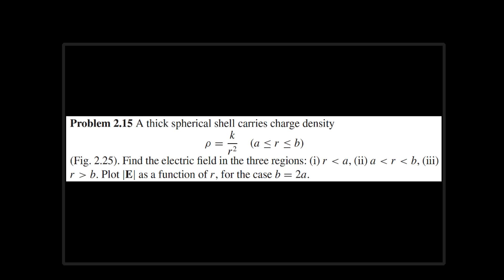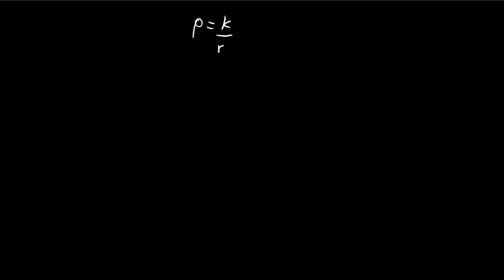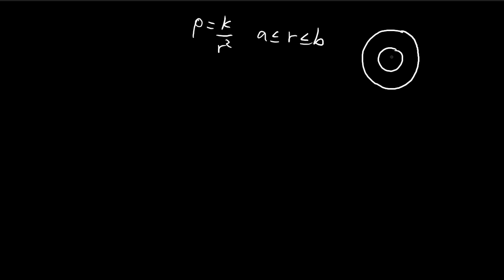So here's the problem. We're told that there is a charge density of k over r squared within this region. You can imagine this being a cross-section of a sphere, with this being a and this being b. We're going to have some charge here that follows this distribution.